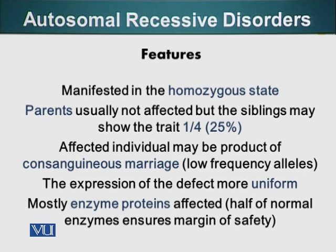Autosomal dominant disorders, on the other hand, are generally caused by mutation or changes in genes coding for regulatory proteins or structural proteins with multiple subunits. To understand this fully, we have to discuss concepts that are beyond the scope of this course, so maybe in a future course we can talk about that.